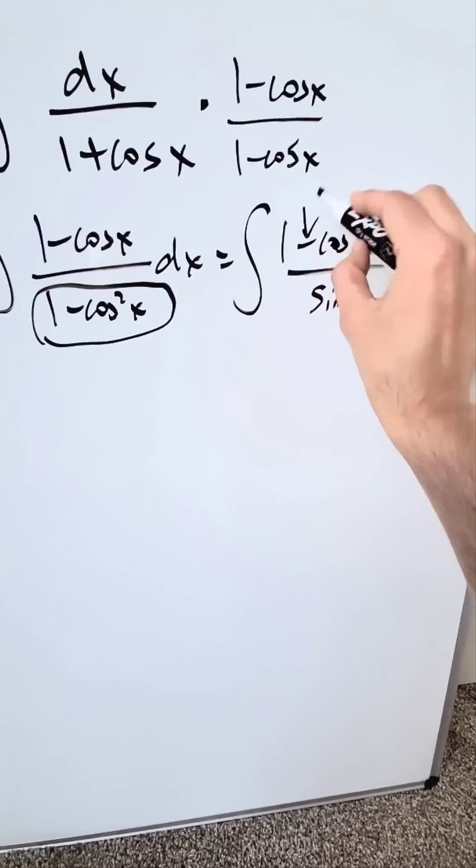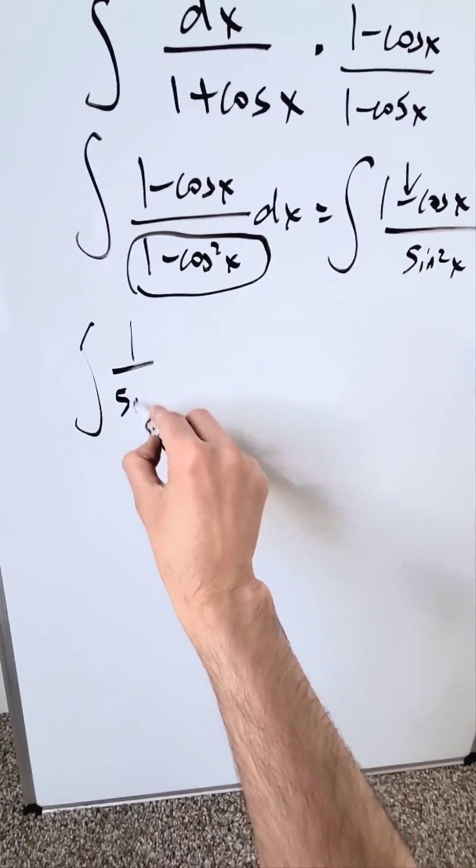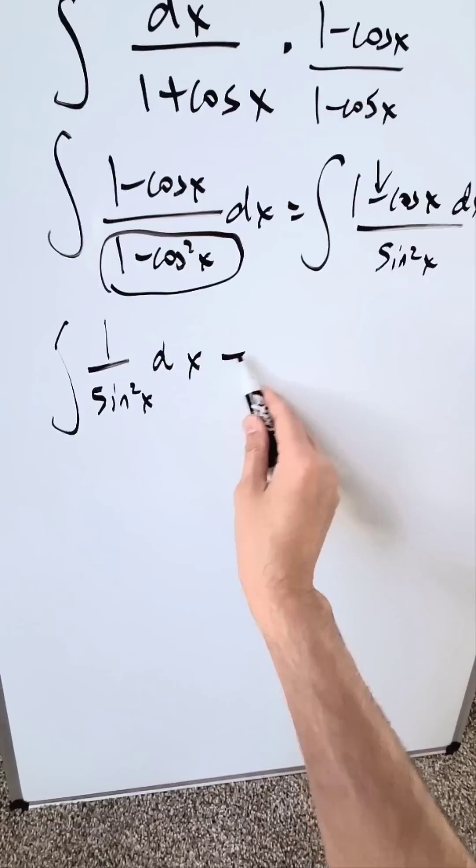Separate everything across this minus into two separate integrals. I'm looking here at an integral 1 over sine square x dx minus. Here's my separation across the minus.